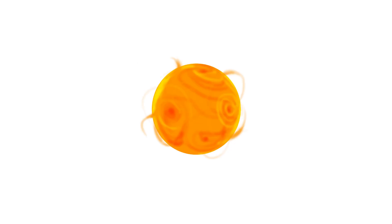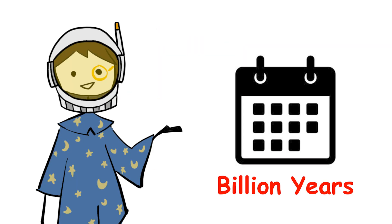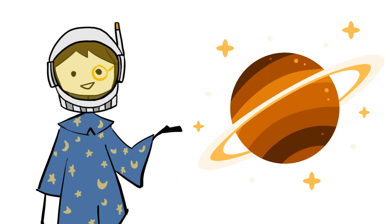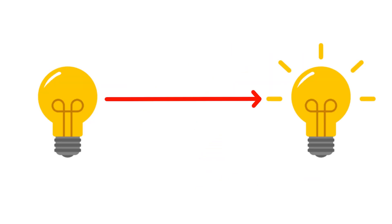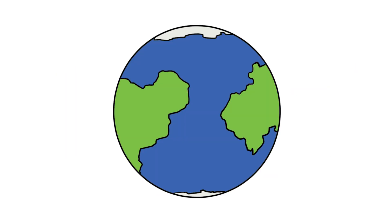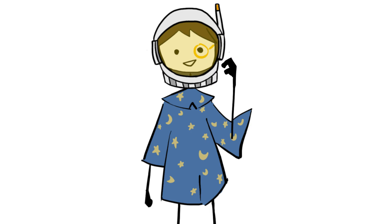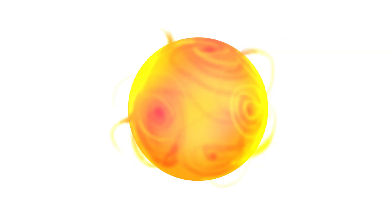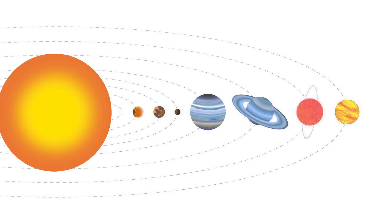The Sun is slowly getting brighter. Every billion years, its luminosity increases by about 10%. According to astrophysical models, this gradual brightening will accelerate over the coming billion years, transforming Earth from a habitable world into a scorched wasteland. At first, the changes will be subtle. But after crossing certain thresholds, the Sun will fundamentally alter the fate of every planet in the solar system.